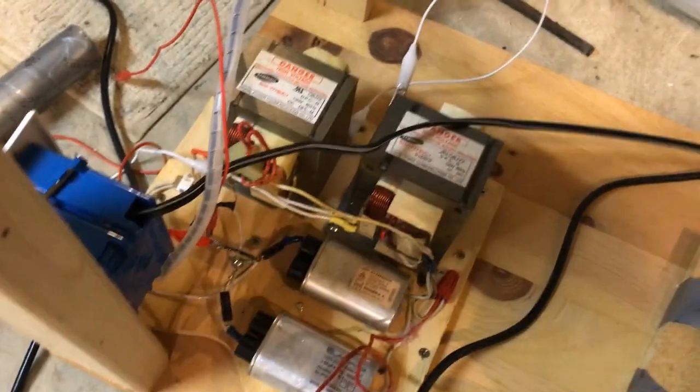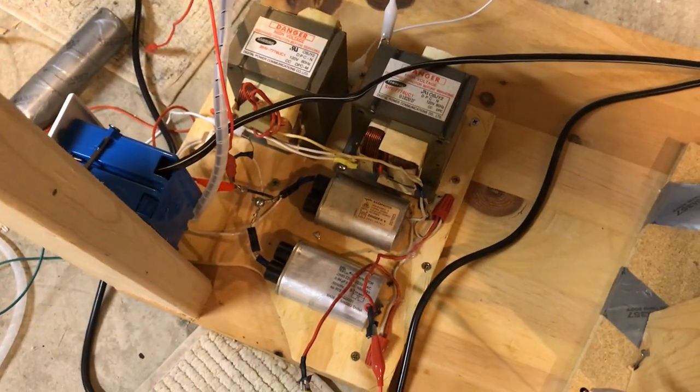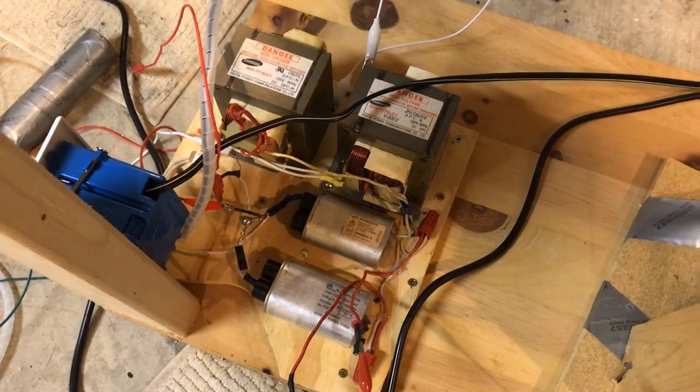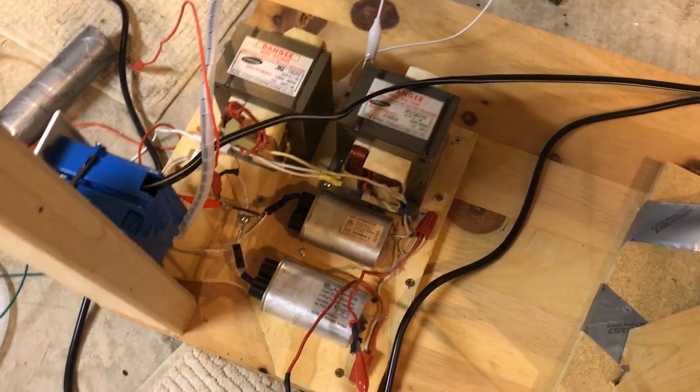Here's the secondary coil. I hand wound that. So that should be pretty nice once it's done. There's the toroid as well. And so this is the primary circuit. It's a voltage doubler circuit in the mix.